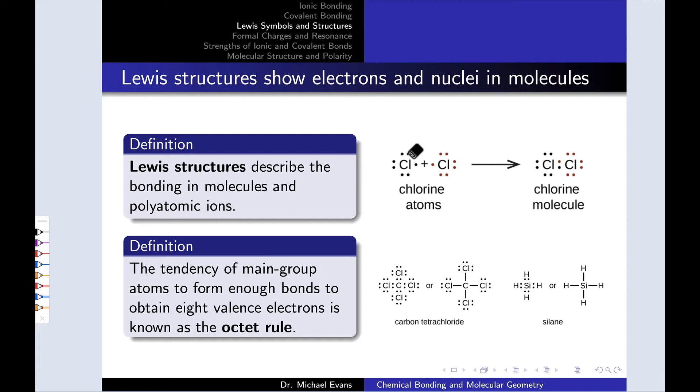For example, we can imagine taking the Lewis symbols for two chlorine atoms and combining their electrons which are unpaired in the separated atoms and putting them together to form a pair of electrons in a covalent bond in the Lewis structure of a chlorine molecule, Cl2.